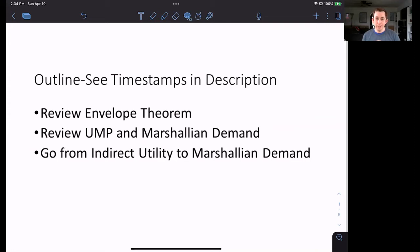Today we are talking about Roy's identity. Roy's identity relates the indirect utility function to Marshallian demand, and it uses the envelope theorem.